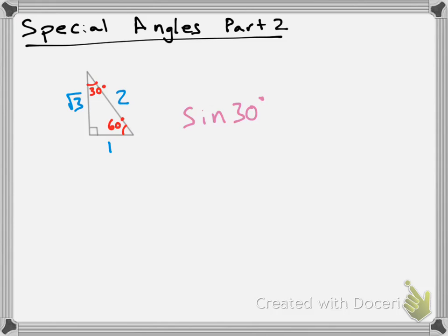So in order to do this, you need to remember that sine is opposite over hypotenuse, S-O-H. We're going to put sine of 30 equals opposite divided by hypotenuse.